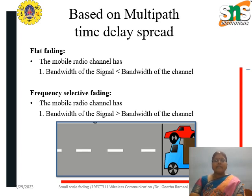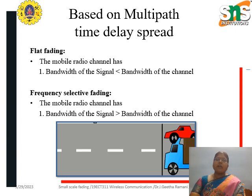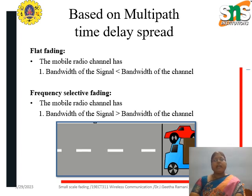In the next case, frequency selective fading, the bandwidth of the signal is greater than that of the channel bandwidth. So if the vehicle is larger than the width of the road, it cannot even enter the road. Like that, the signal cannot enter the channel and interference will result. That kind of fading is called frequency selective fading.